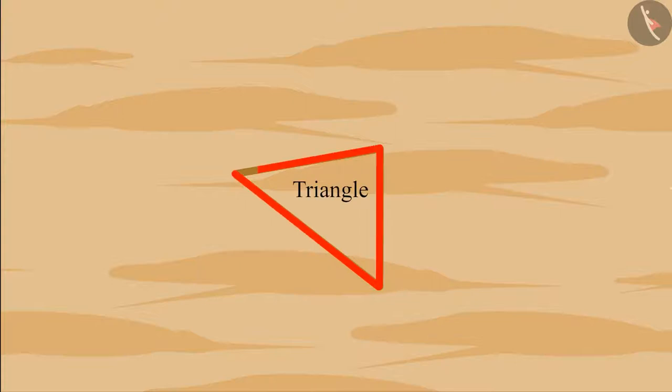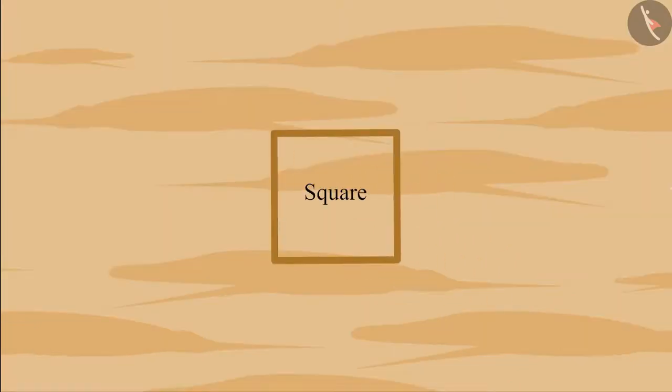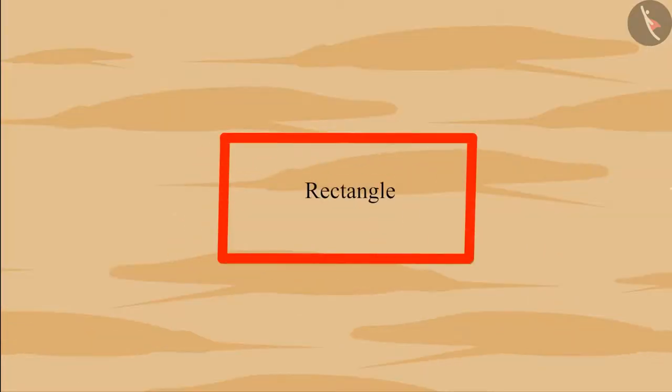Yes, it is a triangle because it is a shape made of three sides. And this one, it is a square because it is a shape made of four equal sides. And this is a rectangle.